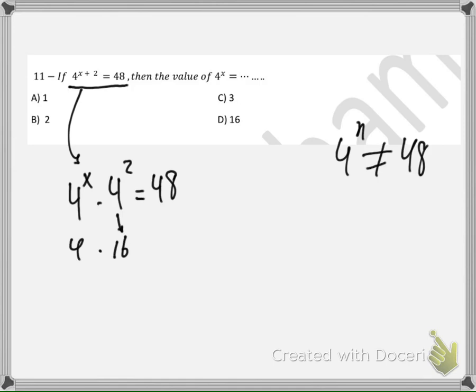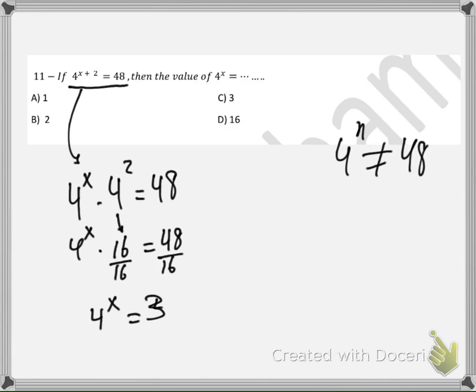4 to the power of 2 we all know equals 16, so 4 power x multiplied by 16 equals 48. By dividing both terms by 16, we'll figure out that 4 to the power of x equals 3. Notice that in this question he is not asking for x; he is asking for 4 to the power of x.